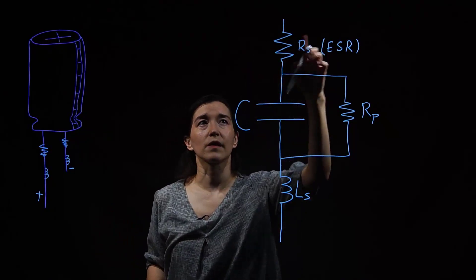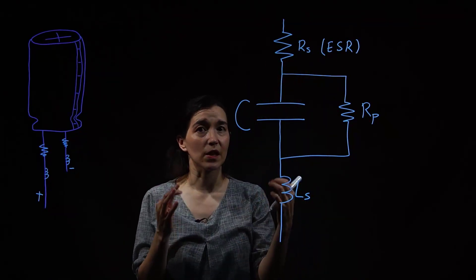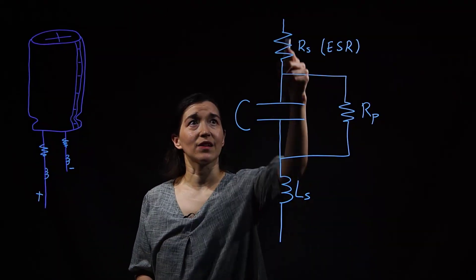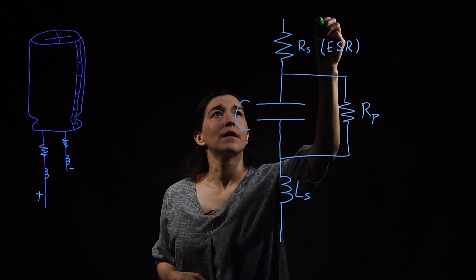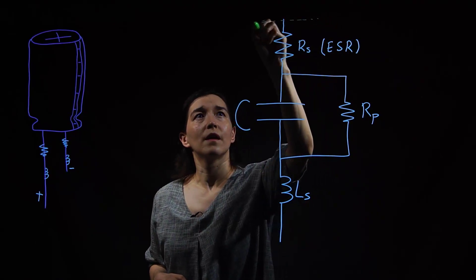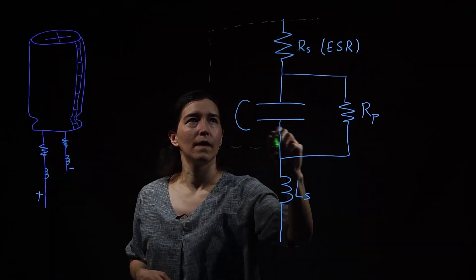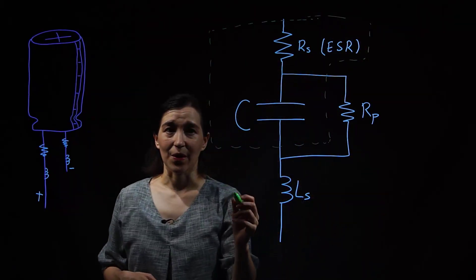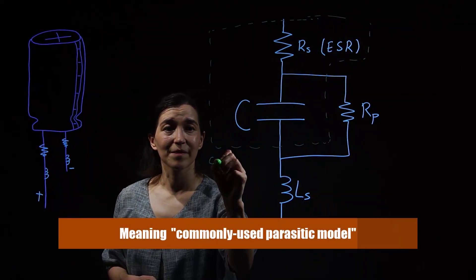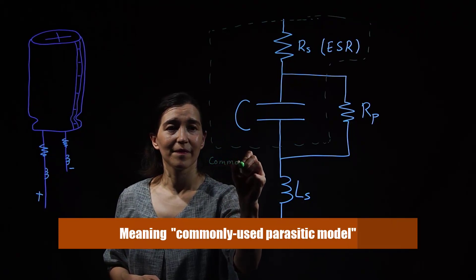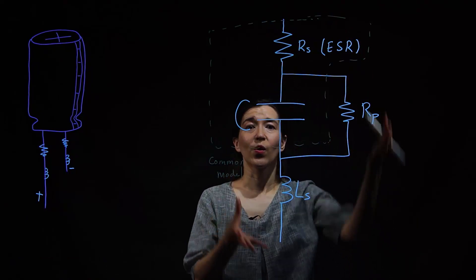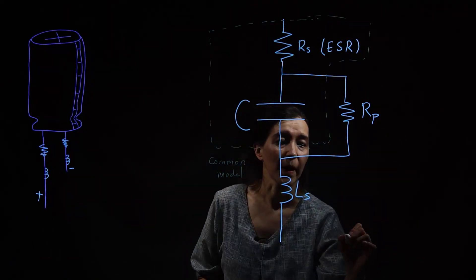And so often we will model as just these two components. So I would say this is the common model. And then this whole thing would be the parasitic model.